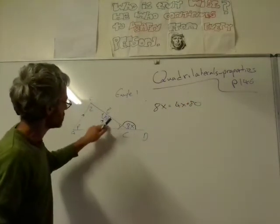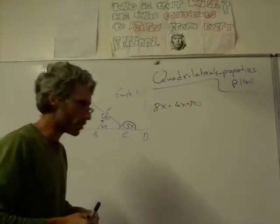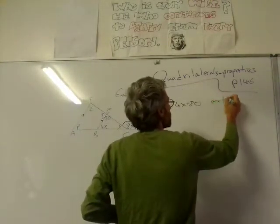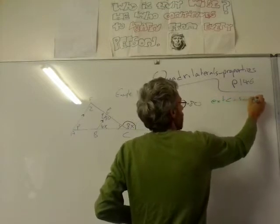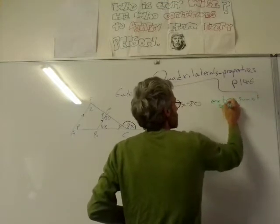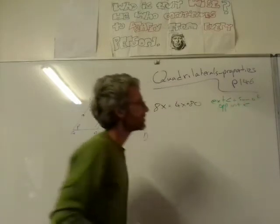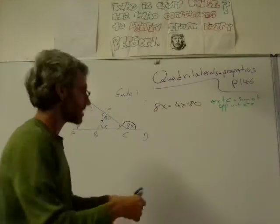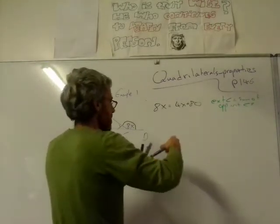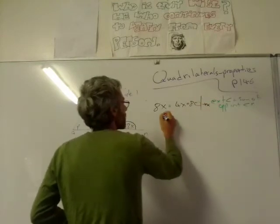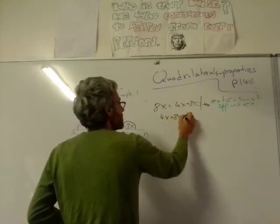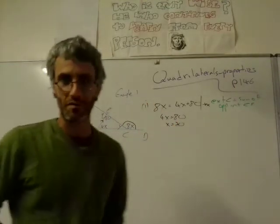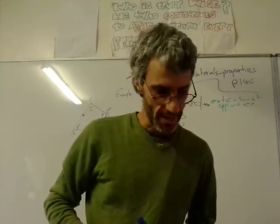So 8X equals that angle plus that angle, and I've got to write down the reason: external angle equals sum of opposite internal angles. This helps me to find X because that's an algebraic equation. I'll do minus 4X, I'll get 4X equal to 80, and that means X equals 20. So that's the first bit I was asked to do.